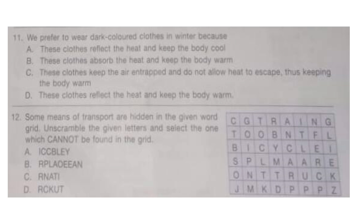Question 12: Some means of transport are hidden in the given word grid. Unscramble the given letters and select the word which cannot be found in the grid. The correct answer is option B: Aeroplane.